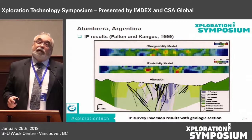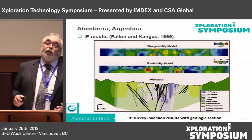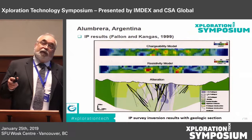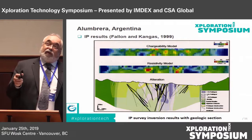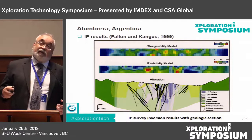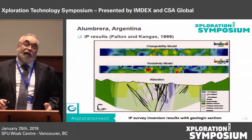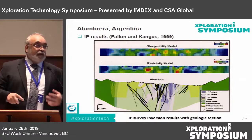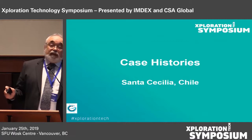Looking at an IP section across Alambrera, the chargeability model gives conductive highs in the near surface — the bright reds — in areas of extensive alteration indicated by mapped black veins. In the resistivity, the hot colors are the conductive zones, and we can start to see a halo beginning to appear. If this were expanded across the entire deposit, we might be able to map out some of the zonation going on within it.